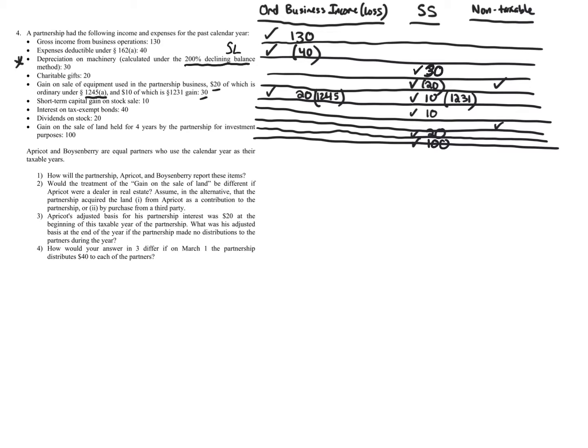If the depreciation were calculated under the straight-line method, it would not be separately stated — because double-declining balance for tax versus straight-line for financial accounting is the key difference. That's why the $30 depreciation is separately stated, not lumped into ordinary income.